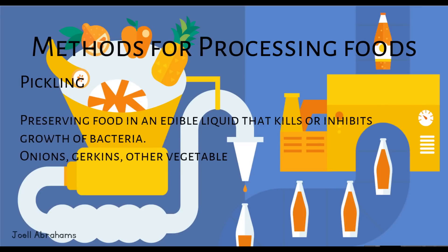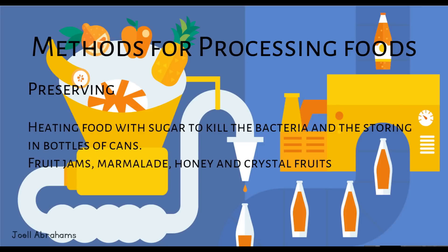Pickling — preserving food in an edible liquid that kills or inhibits the growth of bacteria. Examples include onions, gherkins and other vegetables. Preserving — heating food with sugar to kill the bacteria and storing in bottles or cans. Examples include fruit, jam, marmalade, honey and crystallised fruits.